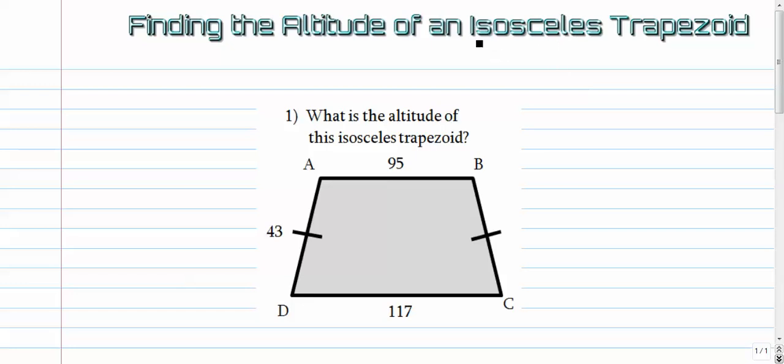In our previous video we looked at isosceles trapezoids and we found a ton of stuff inside the trapezoids. We looked at angles and stuff like that. We talked a little bit about their diagonals. For this one we're actually looking for an altitude.